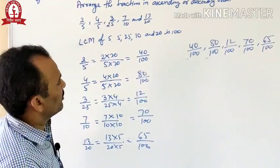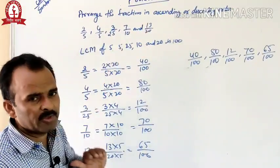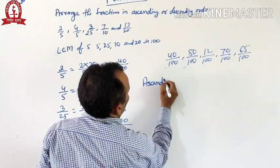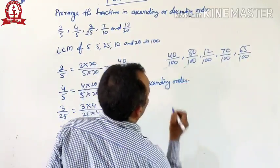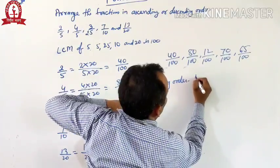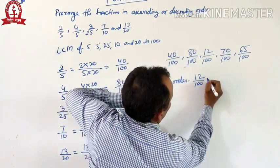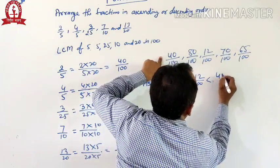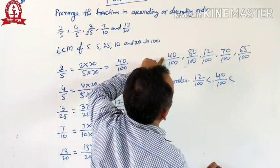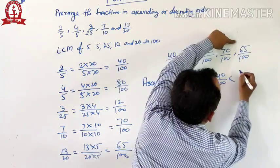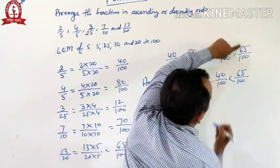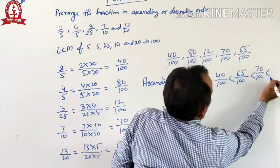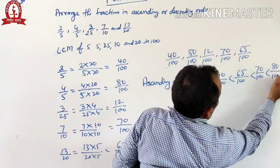Now, how can we arrange the numbers in ascending order? Ascending order means from smaller to greater. The smallest number is 12 by 100, then the next is 40 by 100, then 65 by 100, then 70 by 100, and the last fraction is 80 by 100.